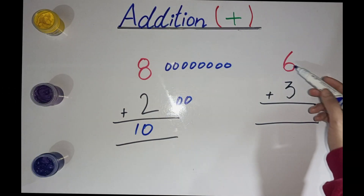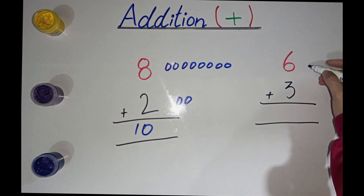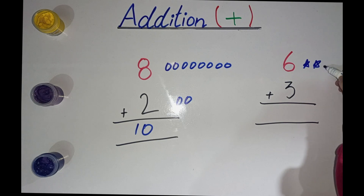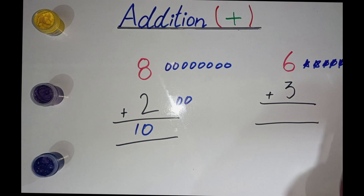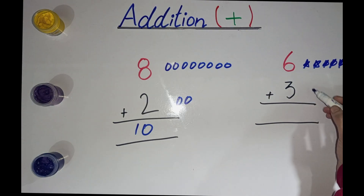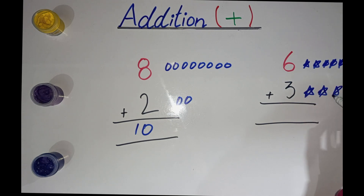What is this number? 6. Make 6 stars here: 1, 2, 3, 4, 5, 6. What is this number? 3. Make 3 stars: 1, 2, 3.